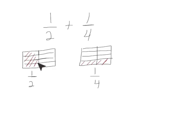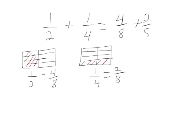In this rectangle that I had divided into half I can see that I have four-eighths shaded in, and in my rectangle where I had one-fourth shaded I have two of the eight shaded in. So my one-half plus one-fourth is going to be the same as four-eighths plus two-eighths, and from our previous lesson we know that four-eighths plus two-eighths is six-eighths.